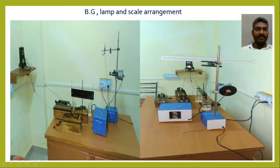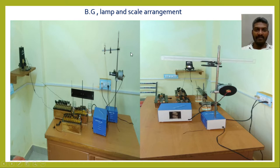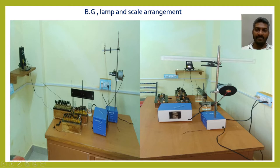In this picture we can see a ballistic galvanometer and lamp and scale arrangement. Usually the lamp and scale arrangement is kept exactly opposite to the ballistic galvanometer, and the scale is fixed at a distance of 1 meter from the ballistic galvanometer. The lamp and scale arrangement consists of a scale fixed to a stand with a lamp below it. From this lamp, light is passed to the ballistic galvanometer, and when it falls on the meter that light is reflected onto the scale.